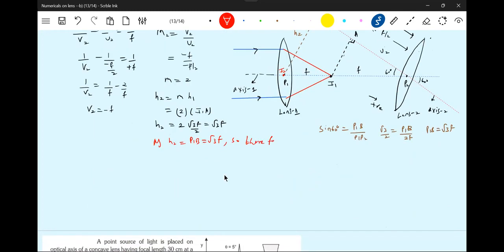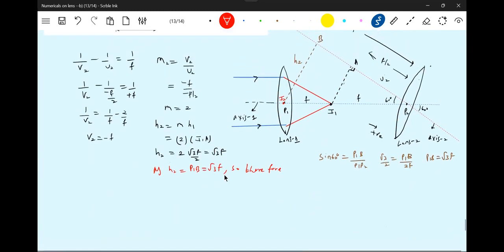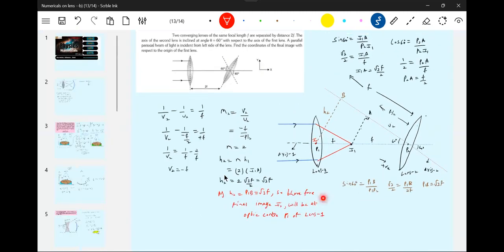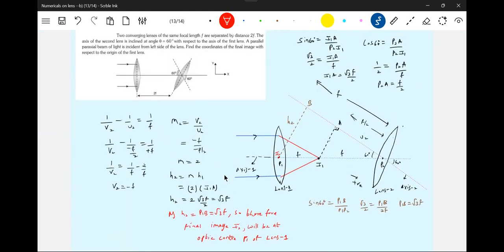As h2 is equal to P1B equal to root 3F, therefore final image I2 will be at optic center P1 of lens 1. Very good problem. You should be very good in observation. We can write equations, but making guesses of things is also needed here. This is the location of final image.